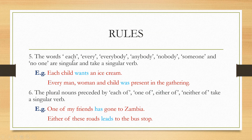The words each, every, everybody, anybody, nobody, someone, and no one are singular and take a singular verb. These are all indefinite pronouns, and in these cases we must use a singular verb. Whenever you get 'each' or 'every', it refers to one — counting one at a time. For example, 'each child wants an ice cream.' With 'each child', I am counting one at a time, so I use a singular verb.